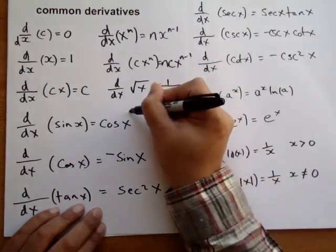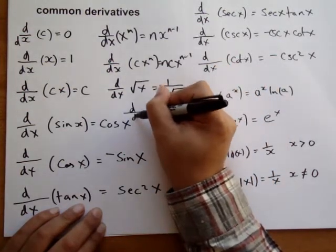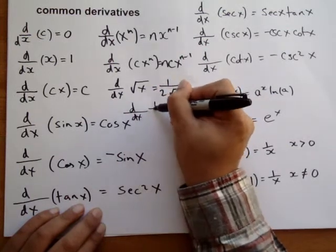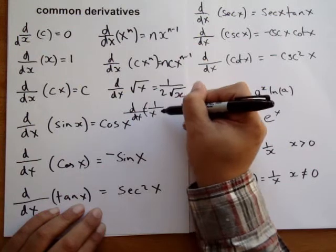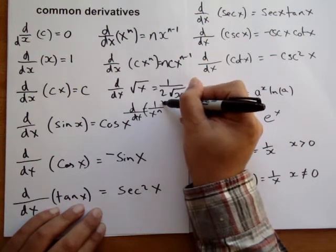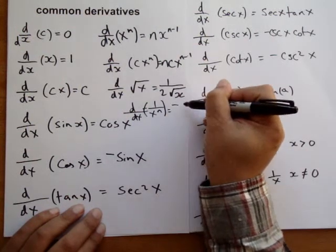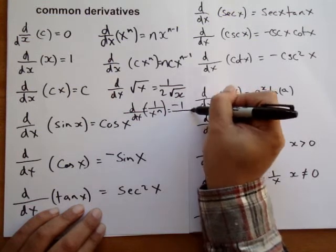The derivative of 1 over x to the power n is minus n over x to the power n plus 1.